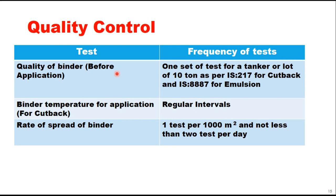For quality control, three tests are recommended: one is the quality of binder before application, with a frequency of one set of tests per tanker or lot of 10 tons, as per IS 217 for cutback and IS 8887 for emulsion. Binder temperature for application should be checked at regular intervals. Rate of spread of binder should be tested at one test per 1000 square meters, but not less than two tests per day. A primed surface shall be allowed to cure for at least 24 hours, or longer as necessary, for moisture and volatile material to evaporate before subsequent surface treatment.